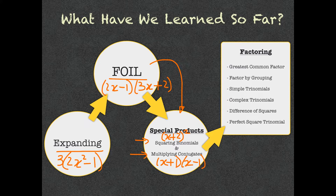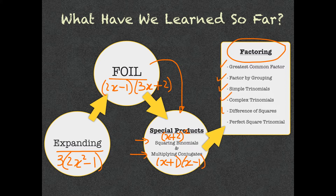After that, we learned about the very important topic of factoring, which is basically the opposite of expanding. We broke it down into six main topics: greatest common factor, factoring by grouping, simple trinomials, complex trinomials, difference of squares, and perfect square trinomials. My goal today is to give you an example of all of these as a review, picking the questions that are a bit more challenging to help you work through them.